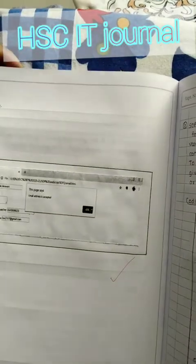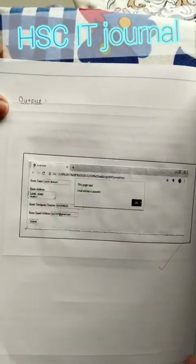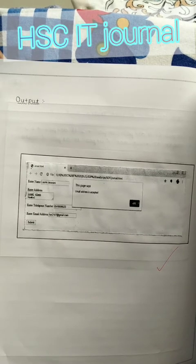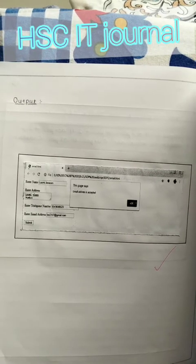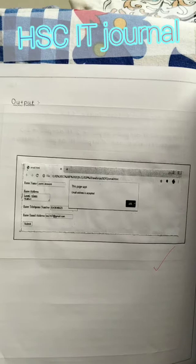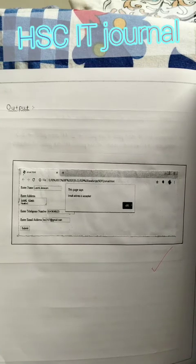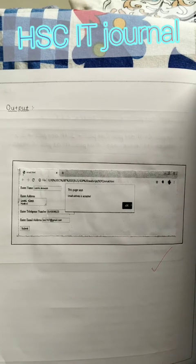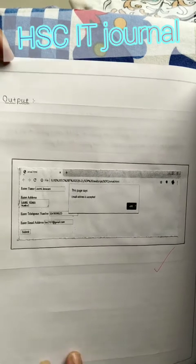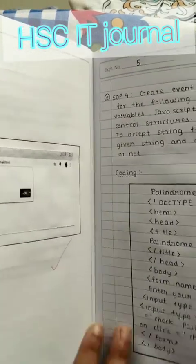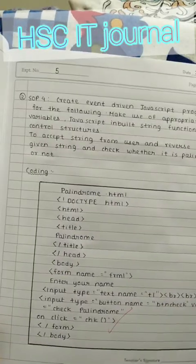This is the output of that particular form. Here you can see name, address, telephone number, email address, and the email address is validated and accepted correctly. Now the next is SOP 4: create an event-driven program using JavaScript.